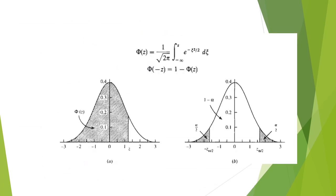The mean mu and variance sigma² are given directly in normal distribution problems, so no special calculation is needed. To find phi(z) for negative z, we use the symmetry of the distribution. Since the standard normal curve is symmetric, the area to the left of a negative z equals 1 minus the area to the left of the corresponding positive z.